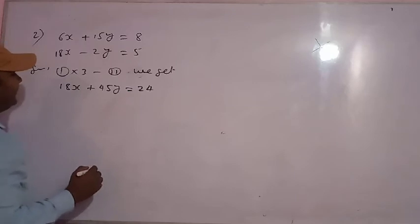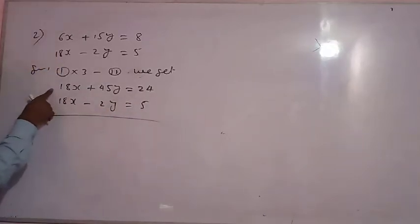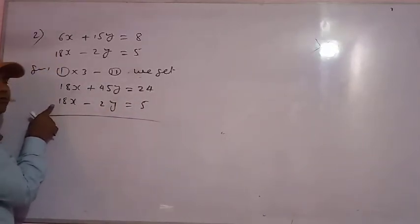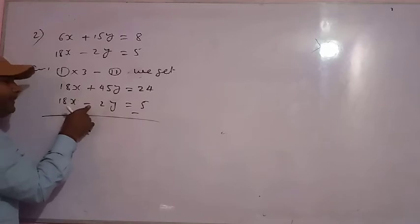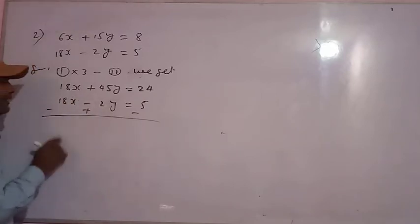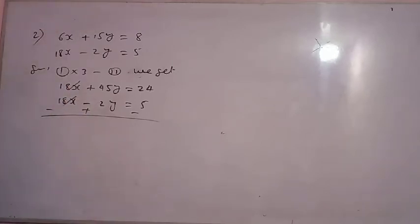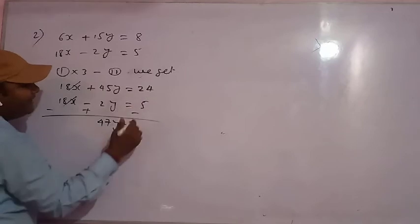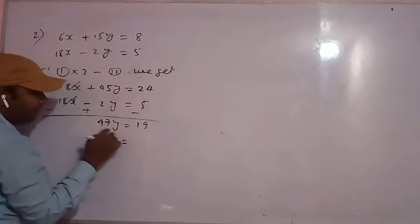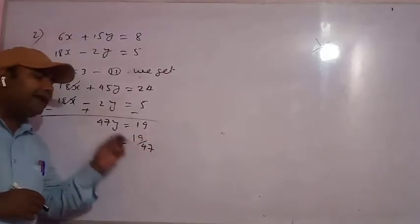The second equation already has 18x, minus 2y equals 5. Since 18x equals 18x, we change signs and subtract: 18x cancels 18x. 45y plus 2y is 47y, and 24 minus 5 is 19. So y equals 19 by 47. The value of y is in the form of a fraction: 19 by 47.